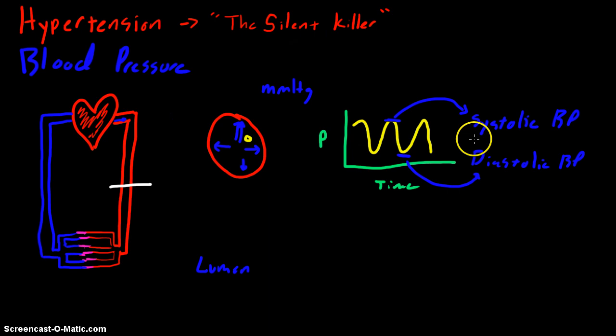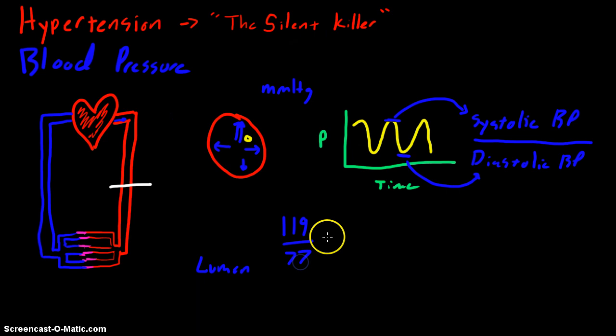It's always read systolic over diastolic. So if you had a patient and you read their blood pressure as 119 over 77, we know that the systolic is 119 and the diastolic is 77. We usually leave the units out, but you do know that it's in millimeters of mercury.